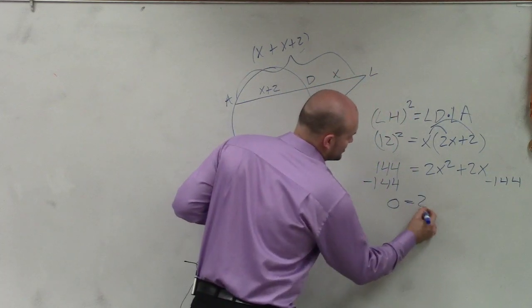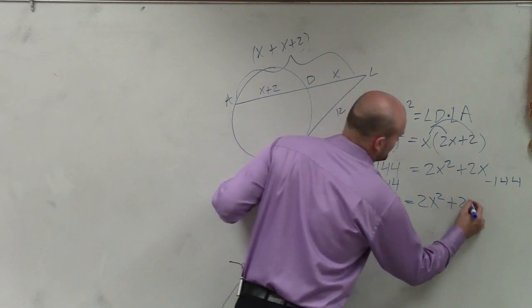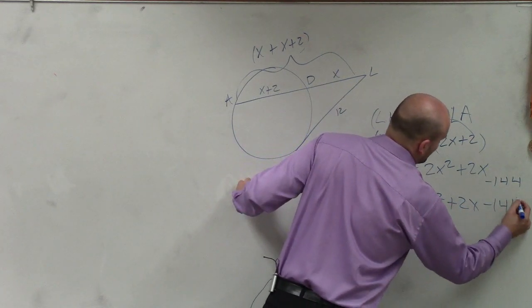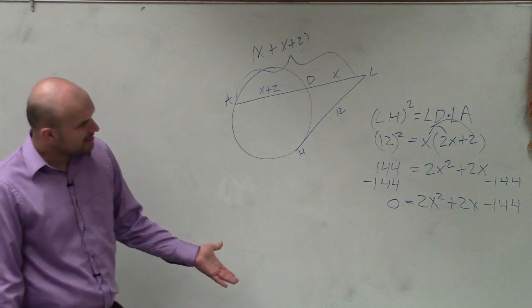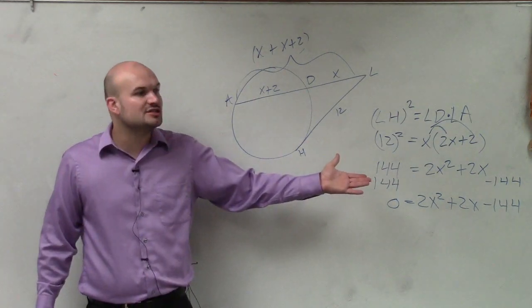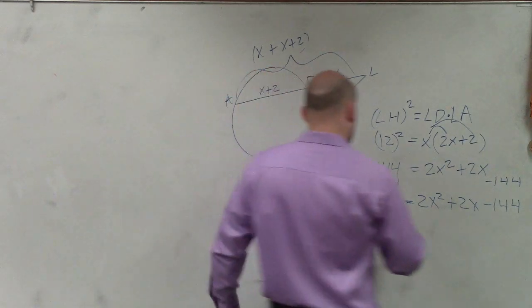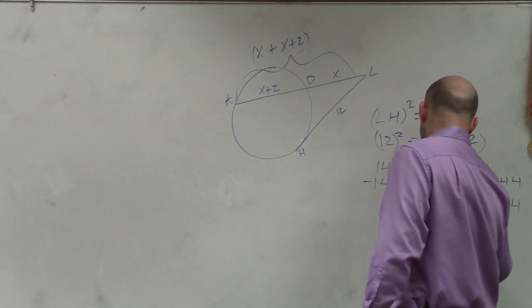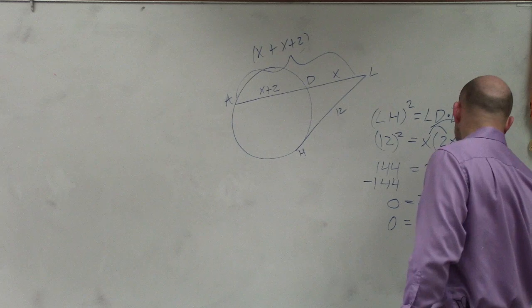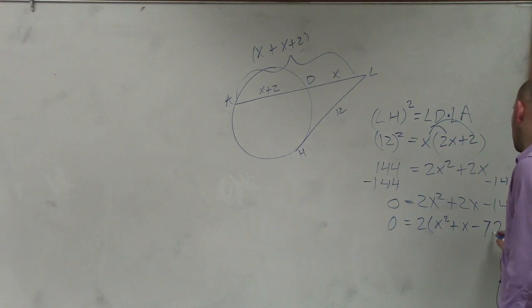So 0 equals 2X squared plus 2X minus 144. All right? Now to do a problem like this, what I can do is see, is there any GCF I can factor out? And yes, you can factor out a 2. So I'd say 0 equals 2 times X squared plus X minus 72.